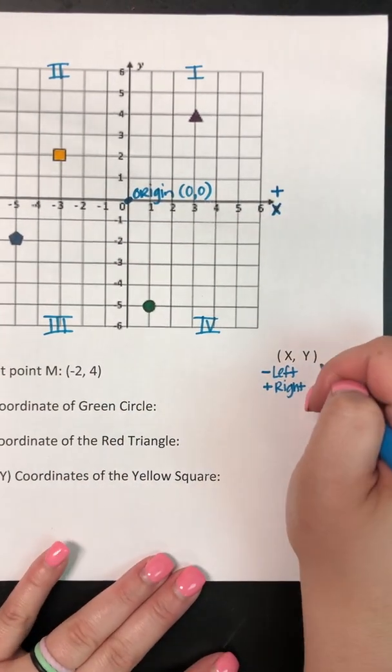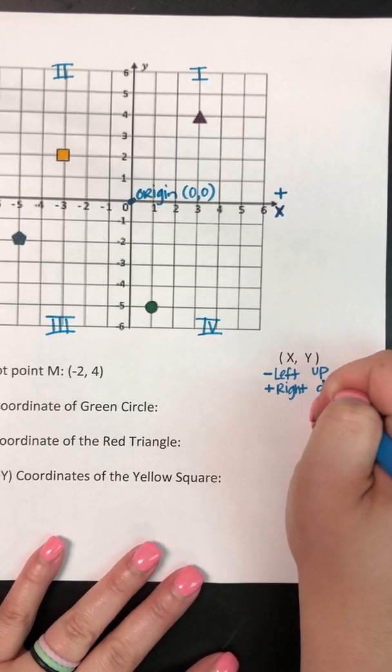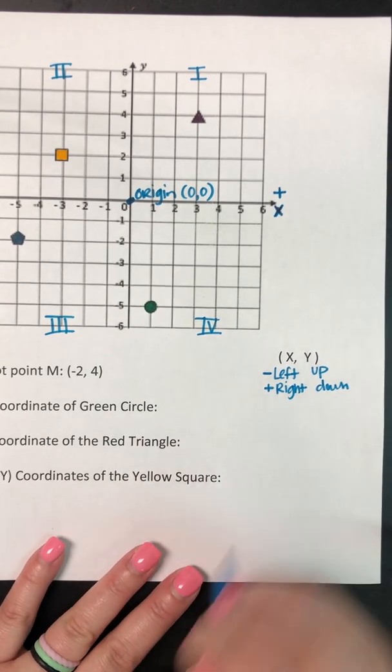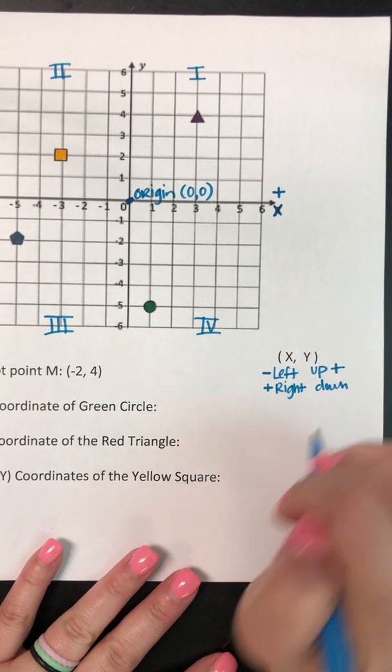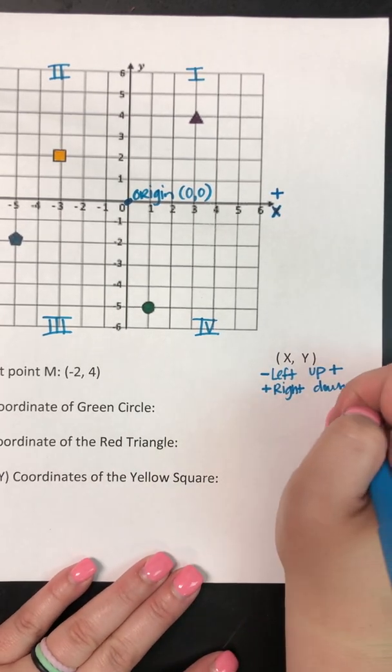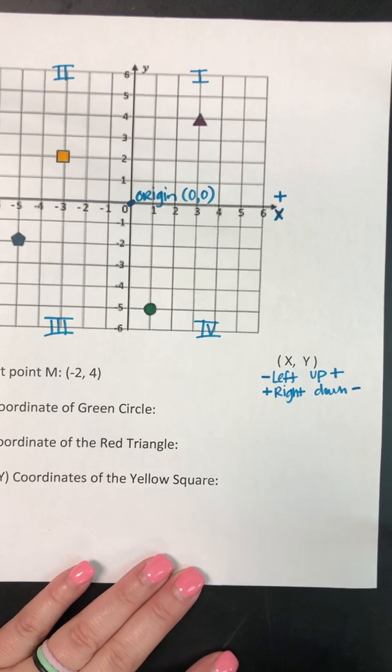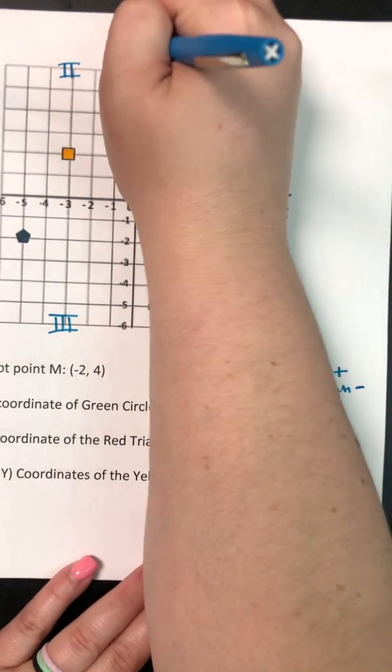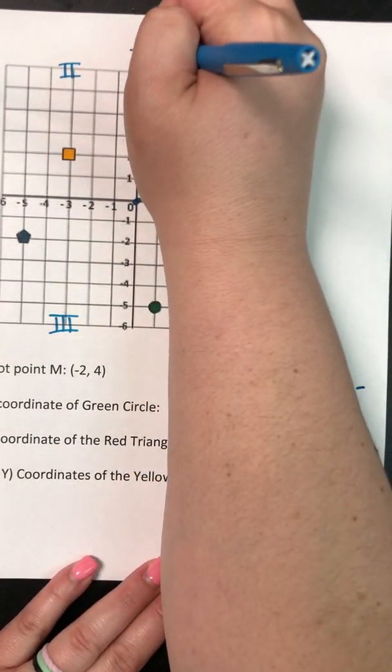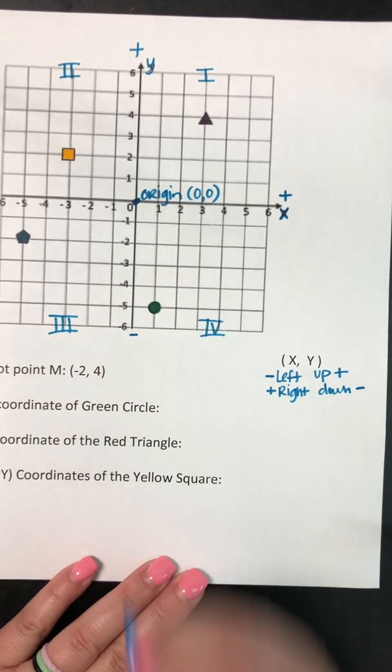And then your y coordinate goes up or down and again up is positive like if you're going upstairs and down is negative. So again y up is positive, this is your y-axis, down is negative.